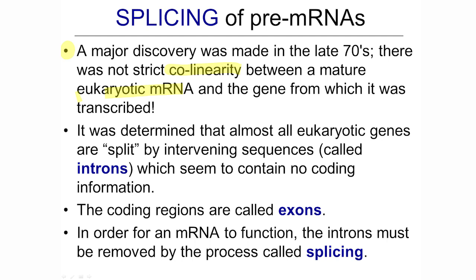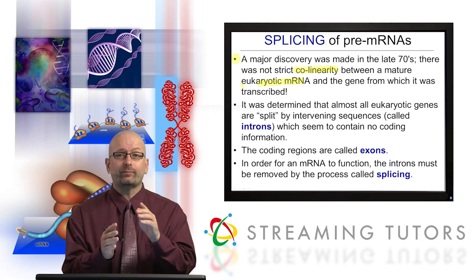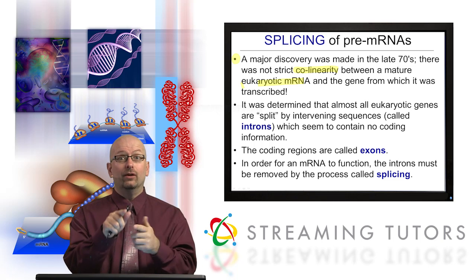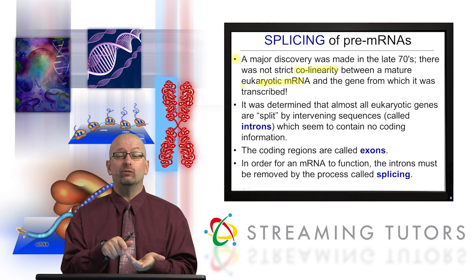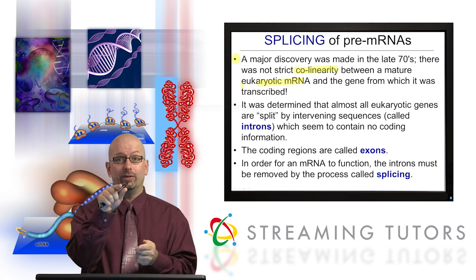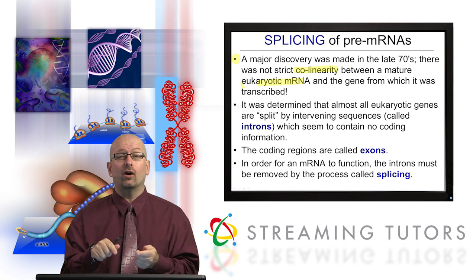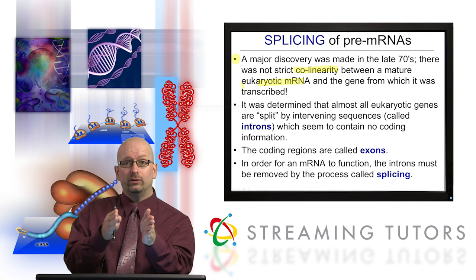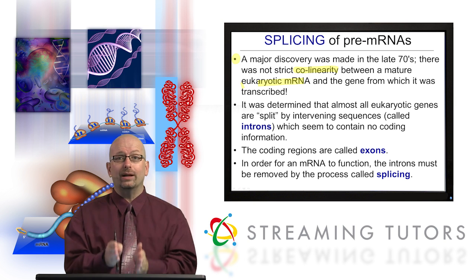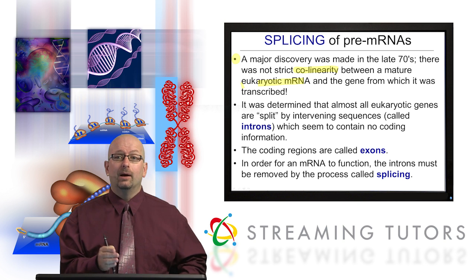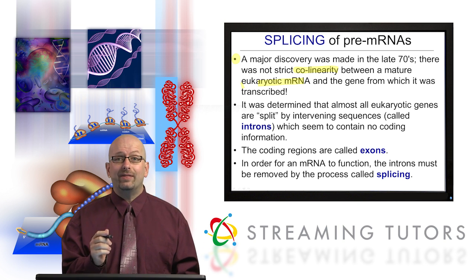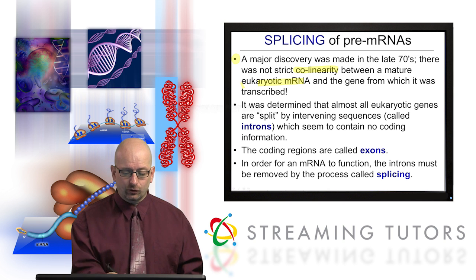We've always said the sequence of DNA nucleotides — since the RNA is made from that — would be collinear, a one-to-one correlation between all of them. But it turns out that is not the case with respect to eukaryotic mRNAs.